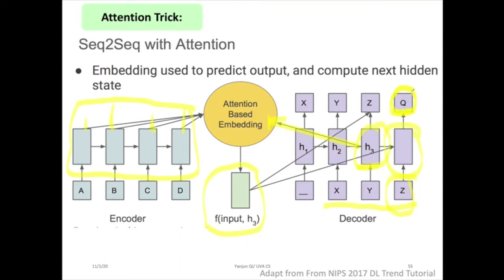This attention has a dynamic focus. For instance, when predicting a word like 'dog', you should focus on the dog-related words from the input, not all words in the sentence. So you feed the regenerated embedding into the generation block together with the previously generated token Z to produce Q.